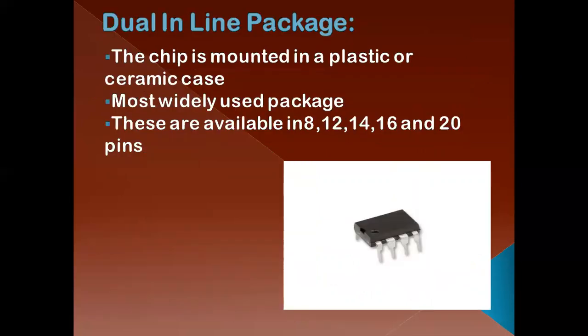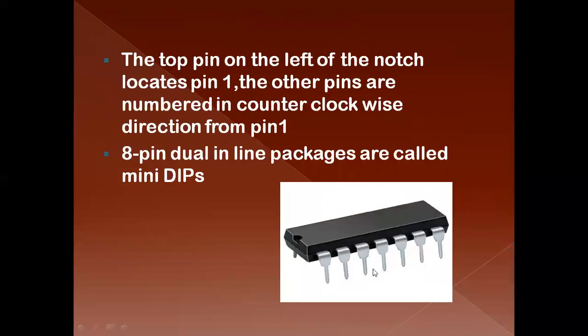The second one is the Dual Inline Package, or DIP package. In this package, the chip or IC is mounted in a plastic or ceramic piece. This is the most widely used package. In this package, as the structure shows, the pins are located on both sides — that's why it is known as the dual inline package. It is available in 8, 12, 14, 16, and 20 pins. To identify pin number 1, there is a notch or a dot on the IC. The top pin on the left of the notch locates pin number 1, and the other pins are numbered in counterclockwise direction from pin number 1.